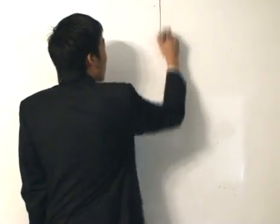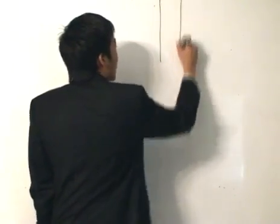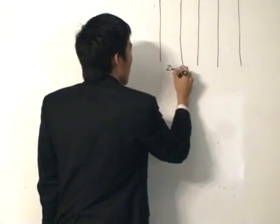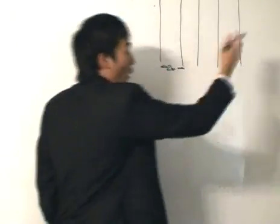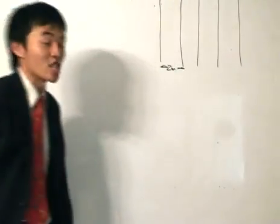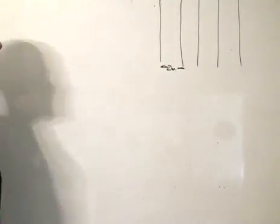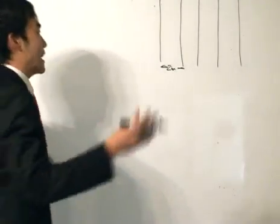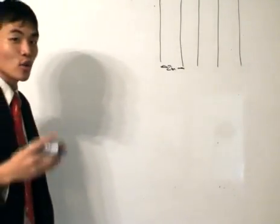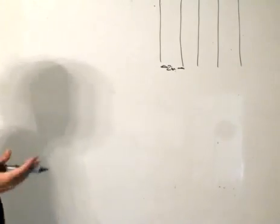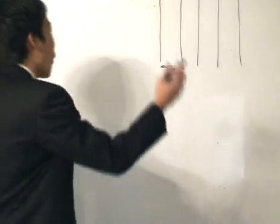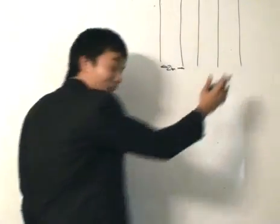The floor is laid out like this, with boards 2 inches in width, and bearing in mind that the floor goes on to infinity — or at least a large enough distance. The problem is that we're going to drop a needle onto the floor. The needle is 2 inches in length, and we want to find the probability that the needle falls and crosses one of the cracks.